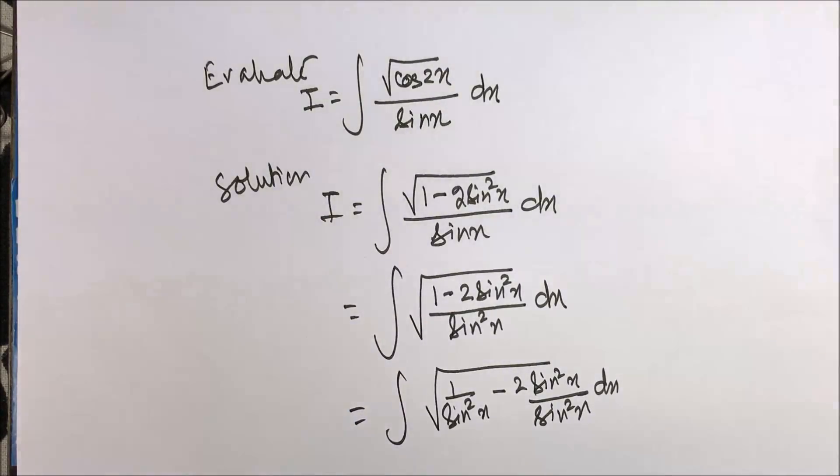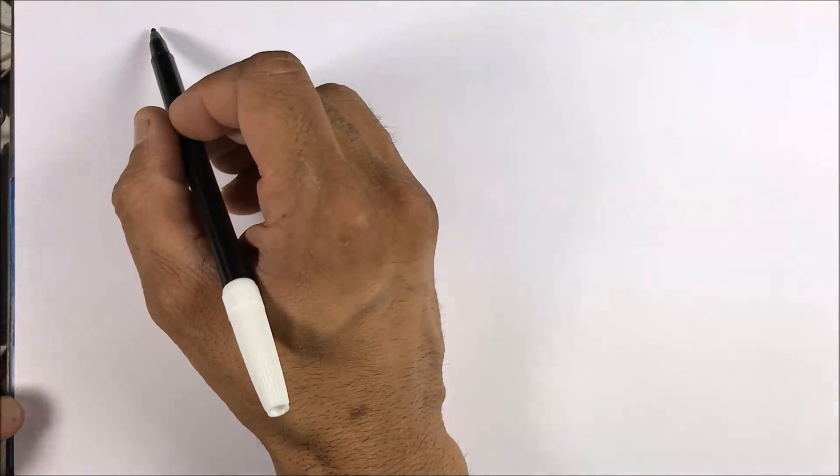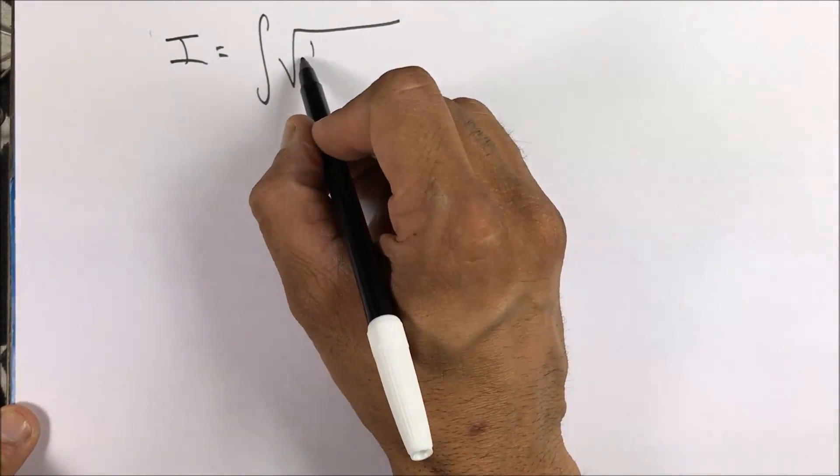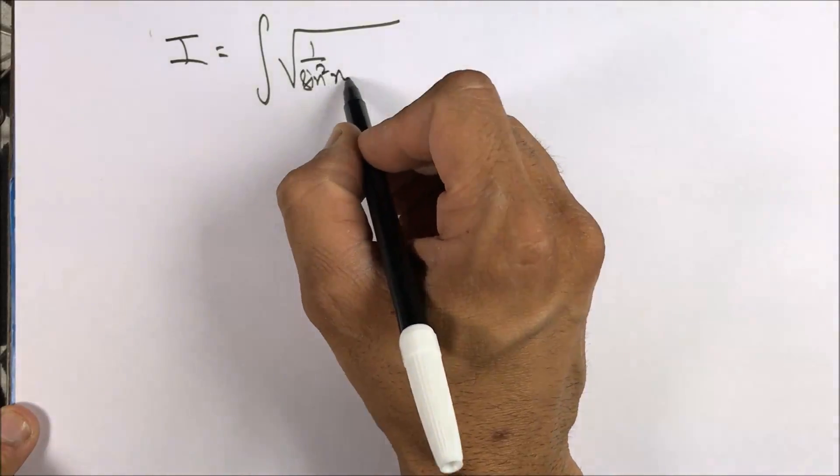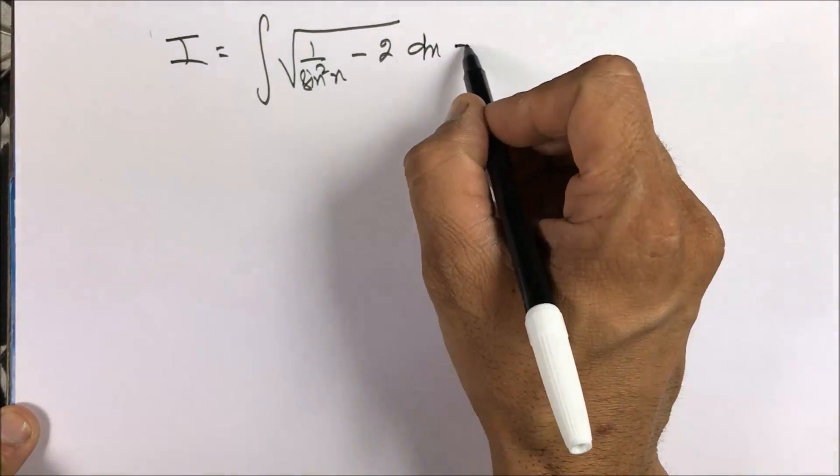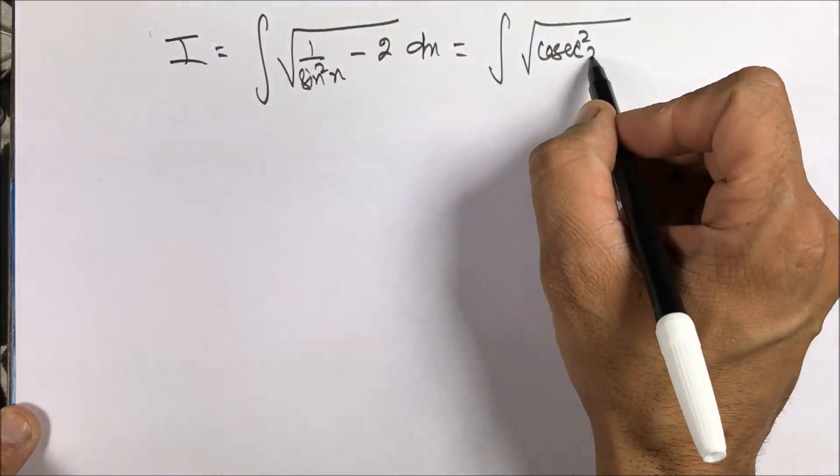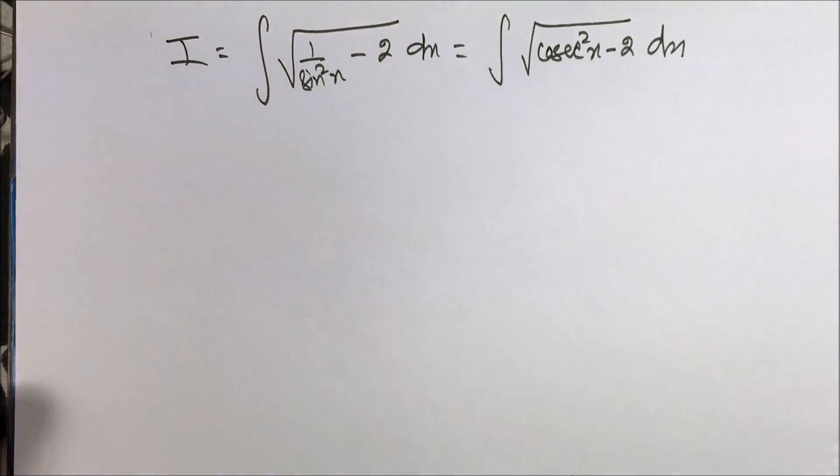We'll be taking 1 over sine square x as cosecant square x. And in the second part, sine square x upon sine square x will be cancelled. We have I equals 1 by sine square x minus 2, and as we were discussing, this will be cos2x minus 2.